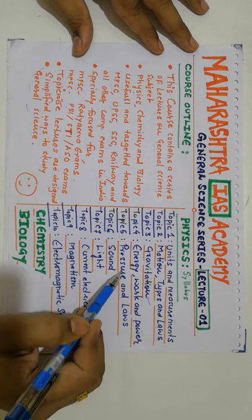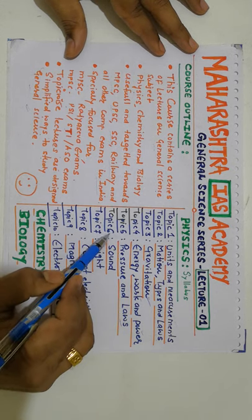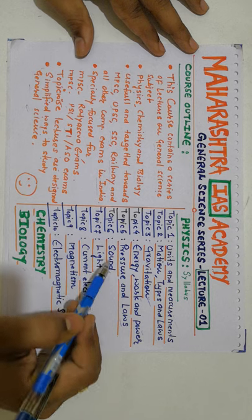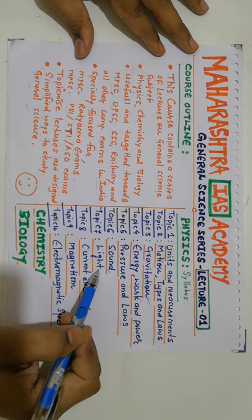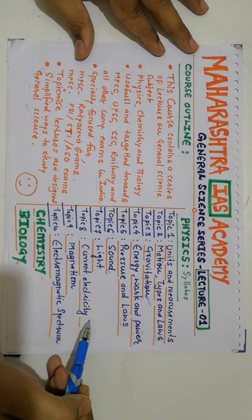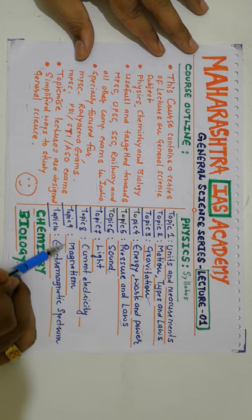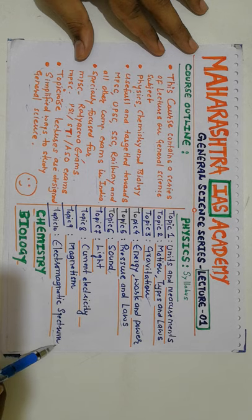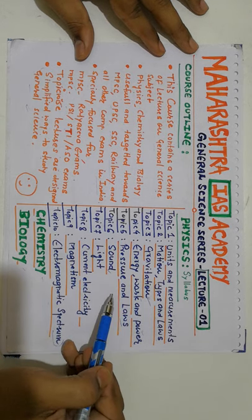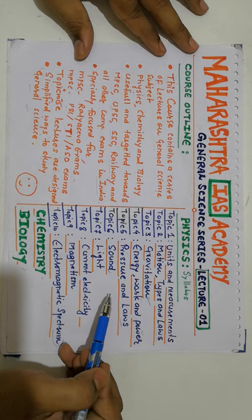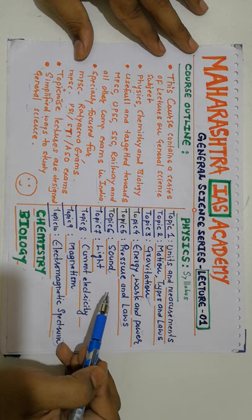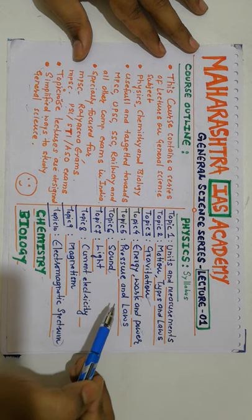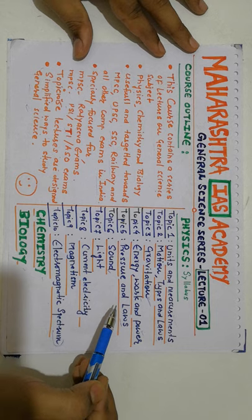Topic number 5 is regarding pressure and associated laws. Topic number 6 is the basic concept of sound. Topic number 7 is the basic concept of light. Topic number 8 is current electricity. Topic number 9 is magnetism. Topic number 10 is the electromagnetic spectrum. These 10 topics are highly important. With all my experience and hard work, I came up with these 10 topics — if you study them religiously, you can attempt each and every question of whatever exam you give. That's a promise.